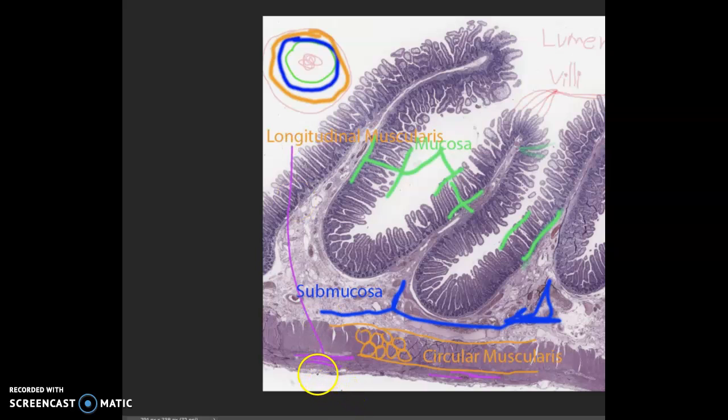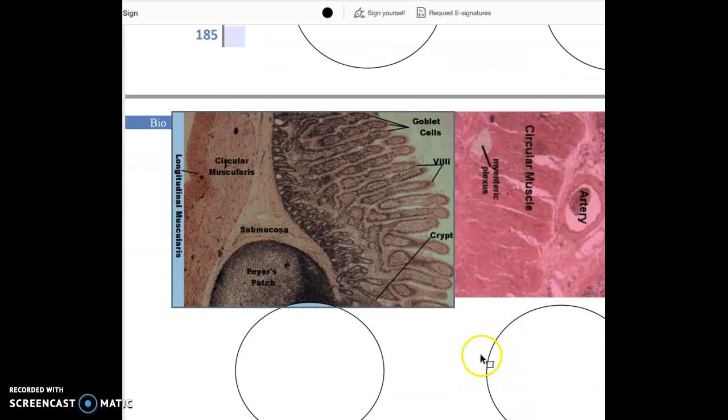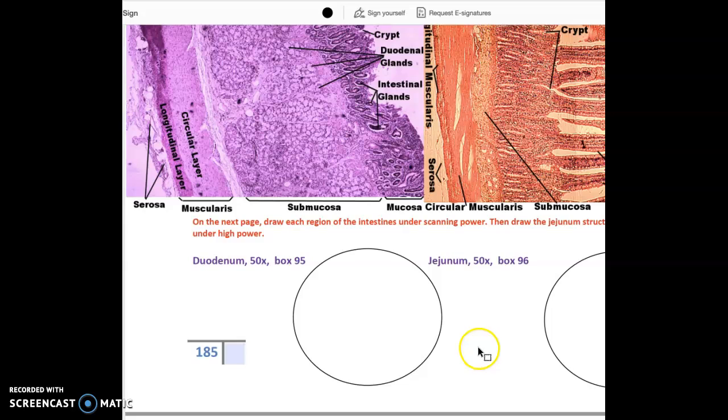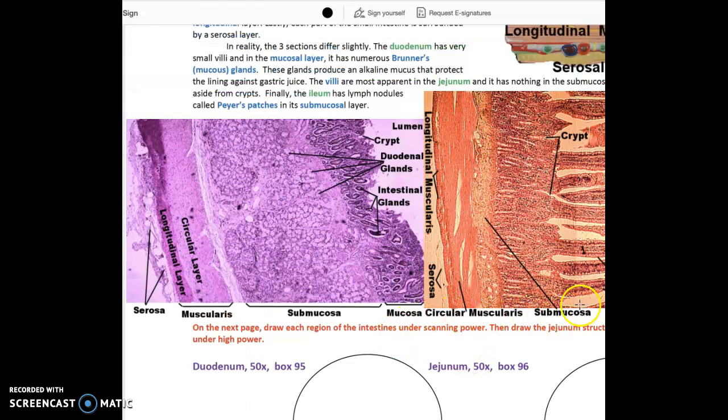And lastly, this is called the serosa layer. And that's why I didn't put longitudinal muscularis. Now, I've said this on other videos, but I'll repeat it. I like putting the layers like this so you can see.